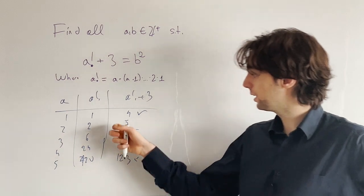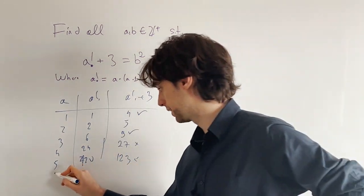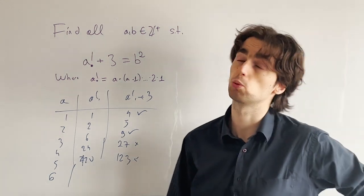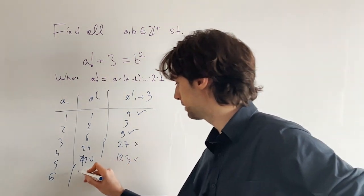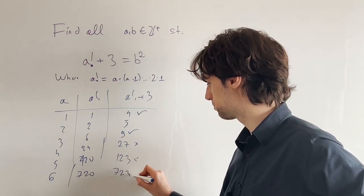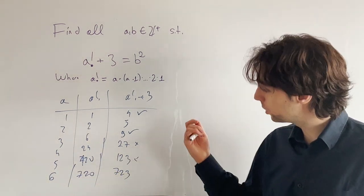So now we found a couple of solutions. And if we look at 6, we'll get 120 times 6. That is 600 plus 120, that's 720. And then 723. Is that a square? No, it's not a square.